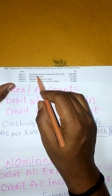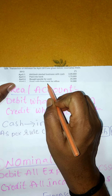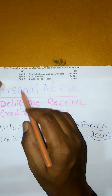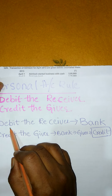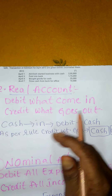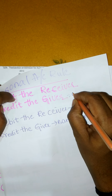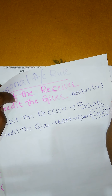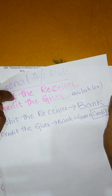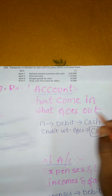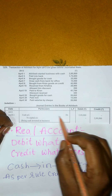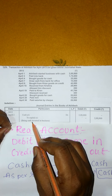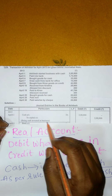Adevidanga Achillesh business start chedaniki capital investment chesthu nnaadu kabatti, Achillesh cash isthu nnaadu kabatti, as per personal account rule — credit the giver. Credit the giver anandate manakku Achillesh giver ayethadu, so Achillesh ni manamu credit chayalcunntundi — Achillesh capital ni credit chayalcunntundi as per personal account. Transaction lo cash account debited 2 lakhs debit kolam lo, capital account credit kolam lo. Being cash invested in business.